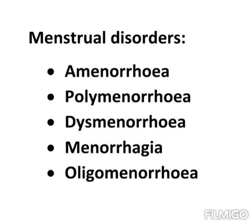So we learned about the menstrual cycle. It is a 28-day cycle. Next we are going to learn about the menstrual disorders. Here we will learn 5 types of disorders. First one is amenorrhea, then polymenorrhea, dysmenorrhea, menorrhagia, and oligomenorrhea. First we are going to learn about amenorrhea.